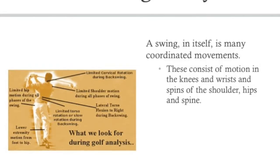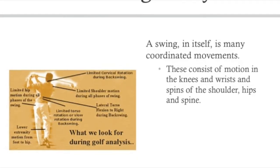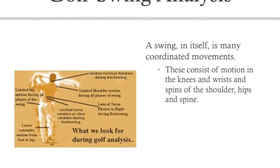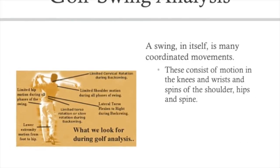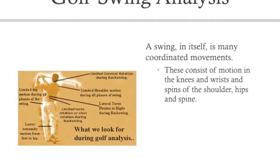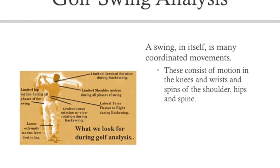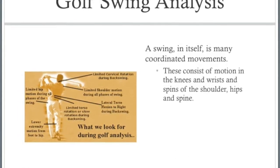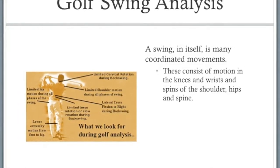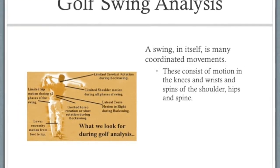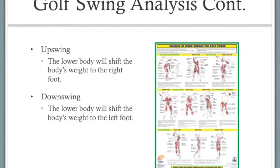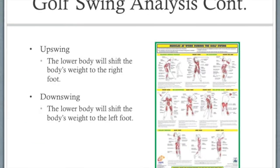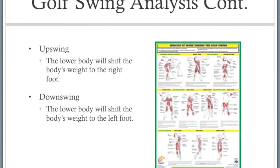The golf swing, which demands constant practice, also needs constant coordination of the feet, lower body, upper body, arms, hands, and the head. In making a proper swing, one must transfer their body weight from side to side and create a consistent rhythmic motion. Without the use of our swing, we cannot understand weight distribution.